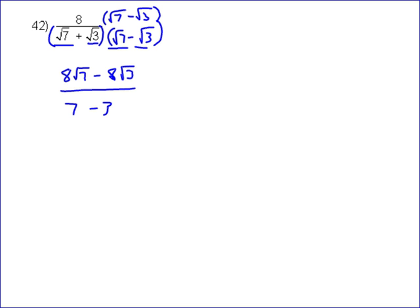And you don't need the middle term, because the middle term cancels out. That's how we designed it. If you wanted the middle term, it would be negative √21, positive √21, which is 0.